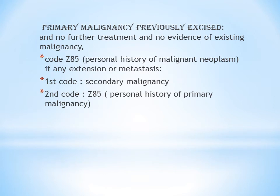Next is primary malignancy previously excised — that is, a patient had a particular malignancy and it was removed or surgery was performed. Now after removing the malignancy, the patient comes to the hospital. Two cases occur: first, there is no evidence of any existing malignancy currently and no further treatment is ongoing for that cancer. When the malignancy is removed and all treatment procedures are completed, you give the code for personal history of malignant neoplasm, which is Z85.